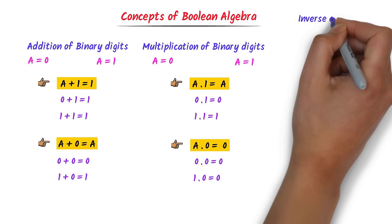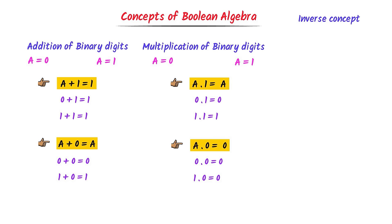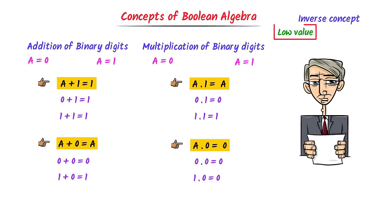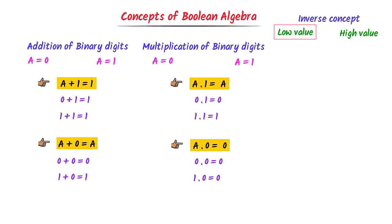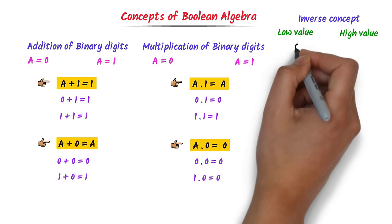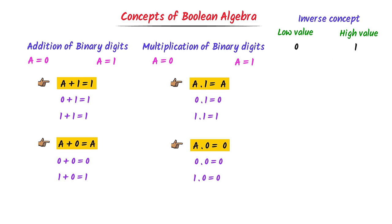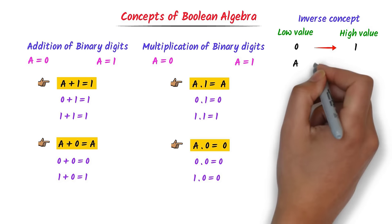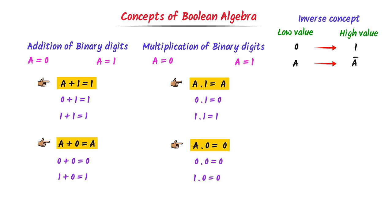Let me teach you the concept of inverse in Boolean algebra. Consider a low value — its opposite is high value. We know that 0 represents low value and 1 represents high value, so the inverse of 0 is 1 and the inverse of 1 is 0. If one binary digit is a, its inverse is a-bar. A bar on any variable represents its inverse value.